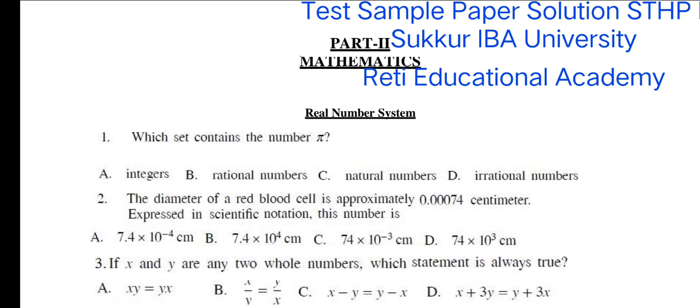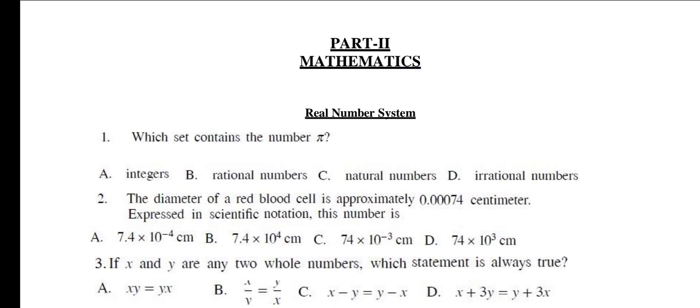Questions from real number system. Question number 1: Which set contains the number pi? A. Integers, B. Rational numbers, C. Natural numbers, D. Irrational numbers. The right option is D. Irrational numbers. Question number 2: The diameter of red blood cells is approximately 0.00074 cm. Expressed in scientific notation, this number is, and the right option for this is A.